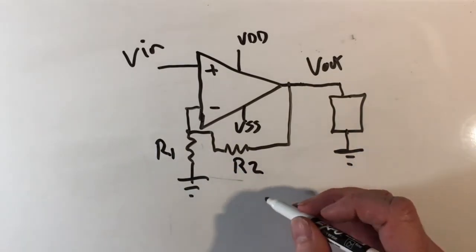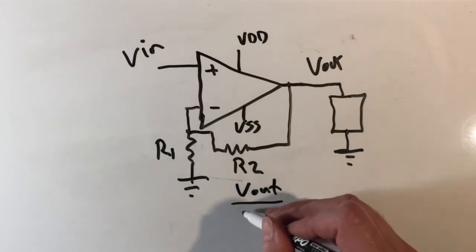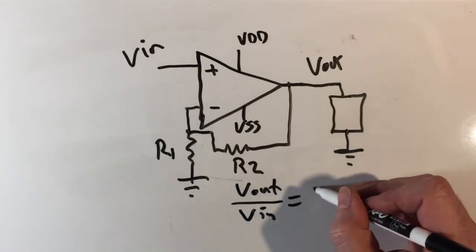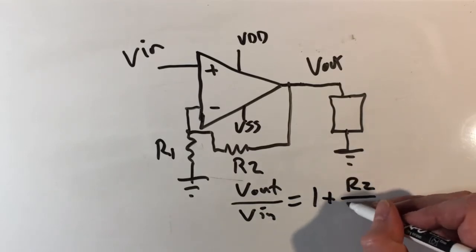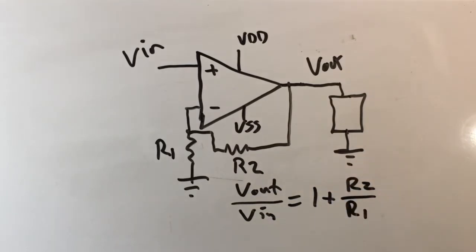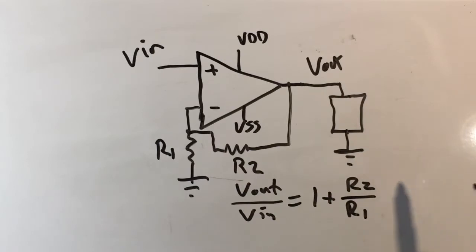You learned in lecture that the gain of this device, meaning V out over V in, equals 1 plus R2 over R1. That's the gain equation. You can see the gain is related to the ratio of the two resistors, and there's this unity component which says you can't get a gain less than one.